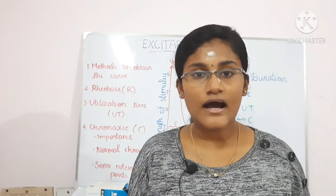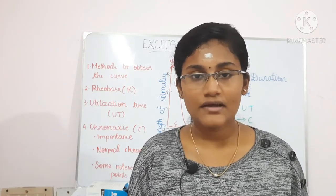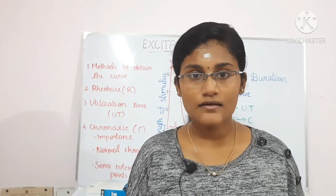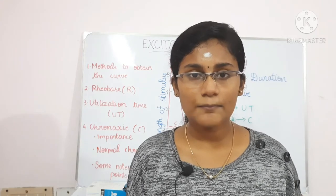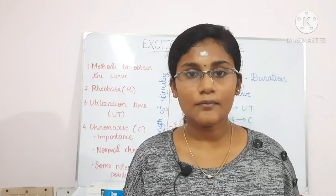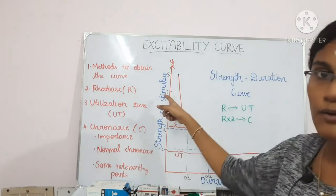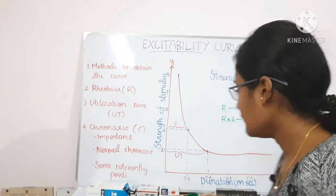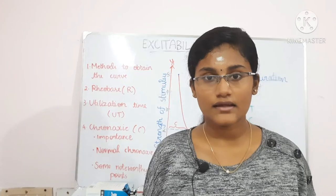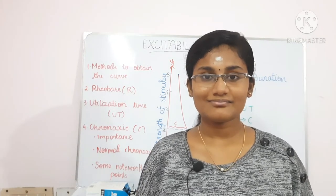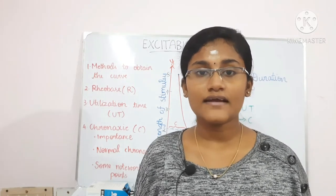To start this experiment you will need a piece of tissue. If using an electrical stimulus, start with a higher voltage and note down the minimum time it takes for the tissue to respond. Then gradually decrease the voltage and note the subsequent times. When you plot all the data on a graph, put duration on the x-axis and strength of the stimulus on the y-axis. Strength is measured in volts and duration in milliseconds.